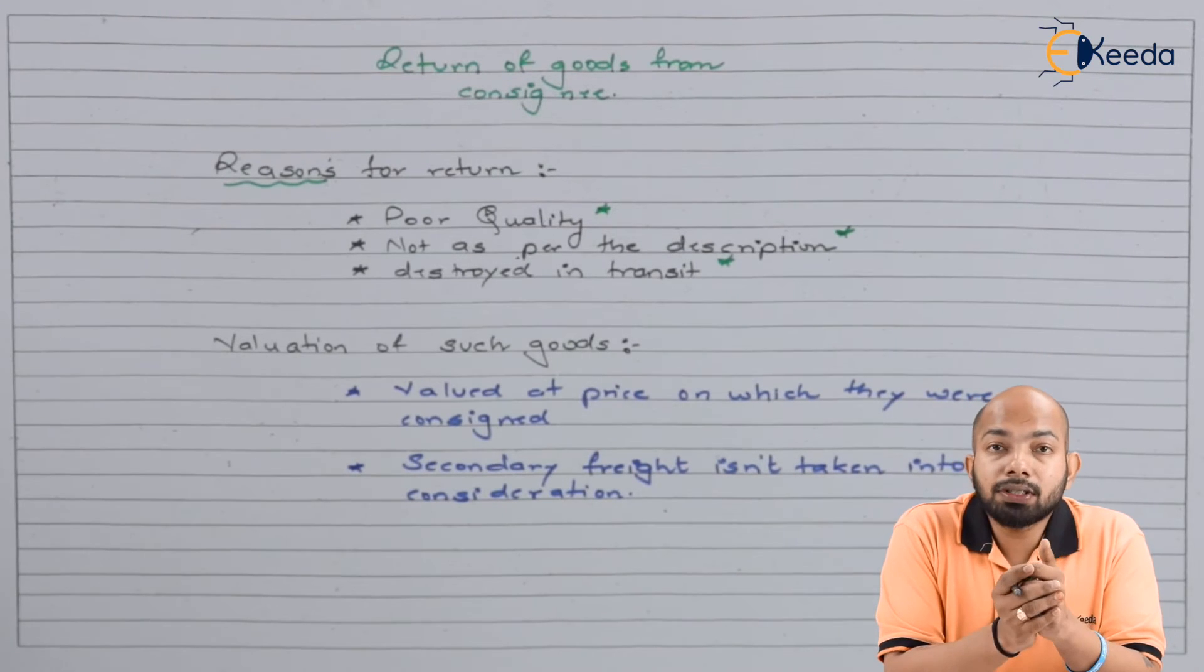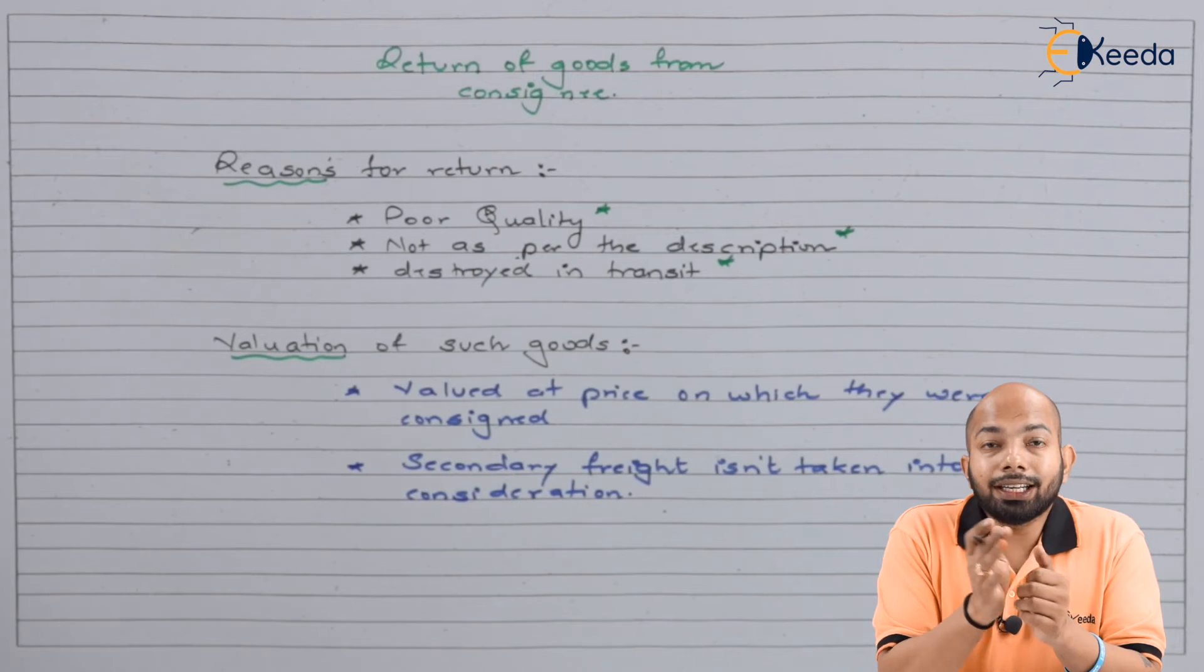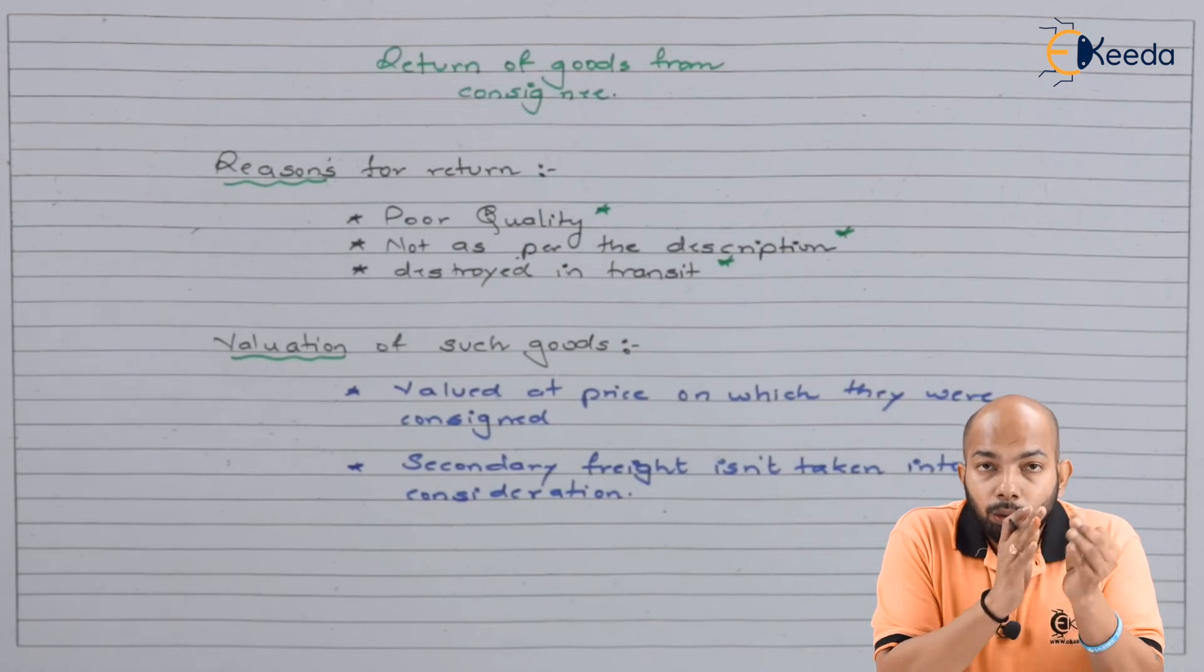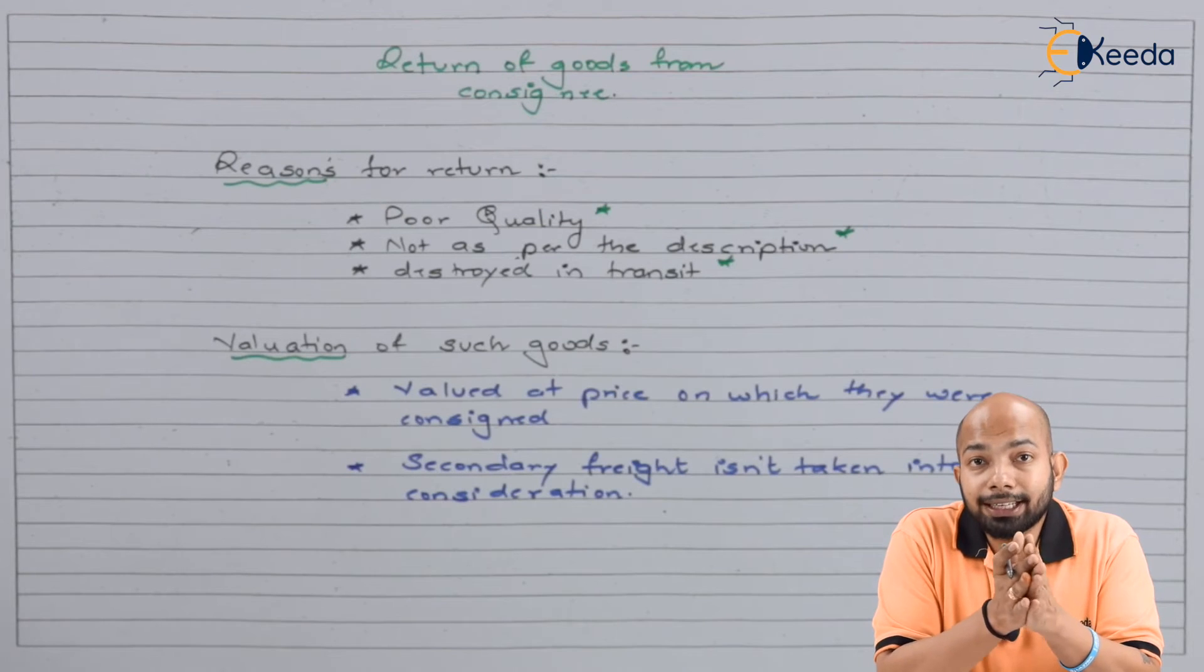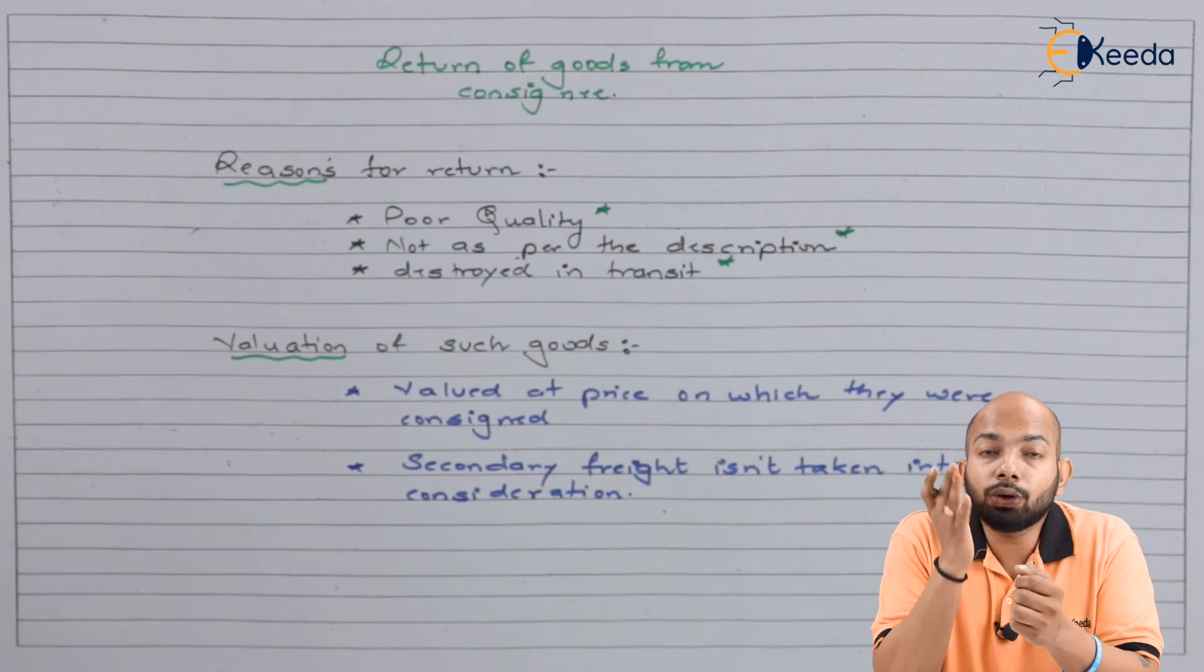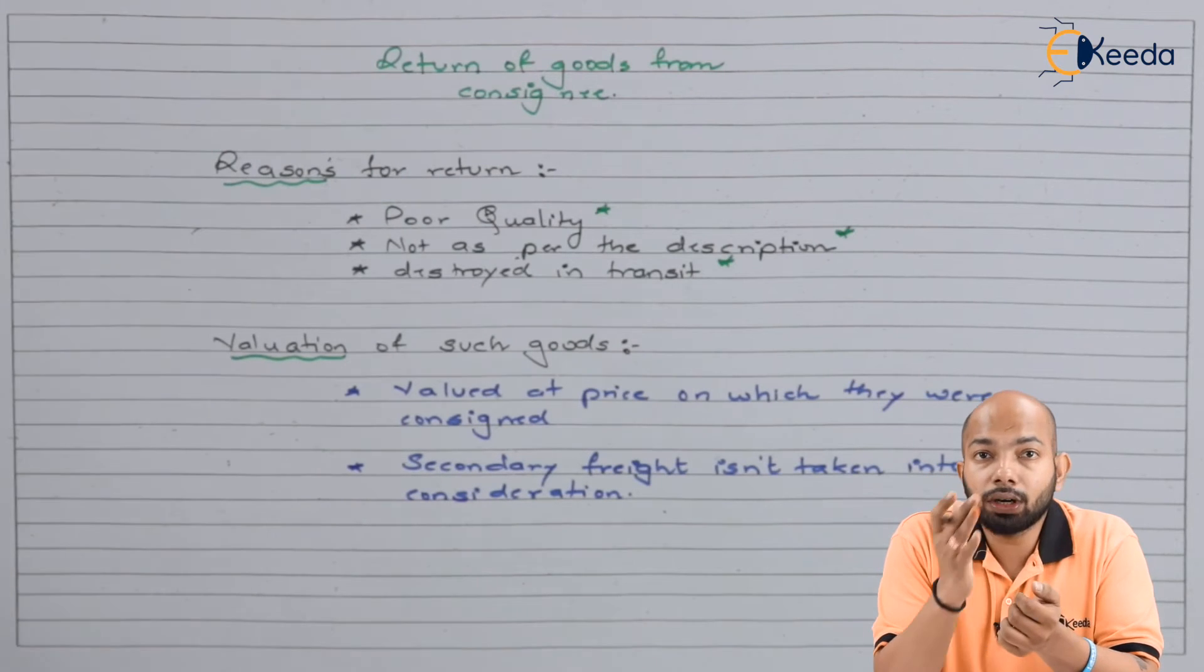Now, the next part is the valuation of such stock. It is valued at the price for which it was consigned. When the proforma invoice was sent out earlier, the goods sent back will be valued at that consignment price - nothing more, nothing less.